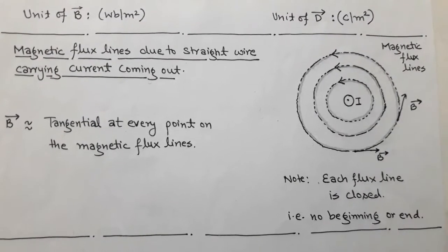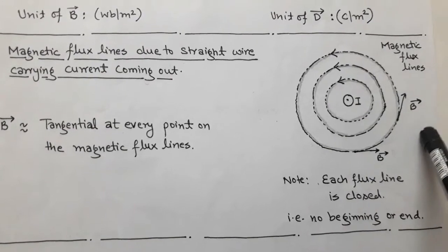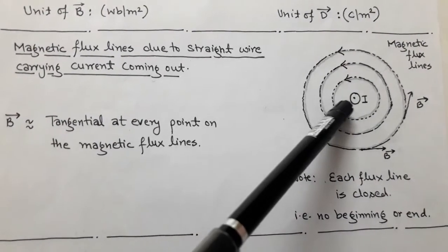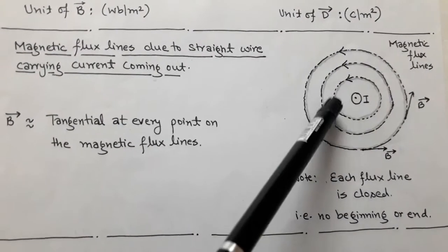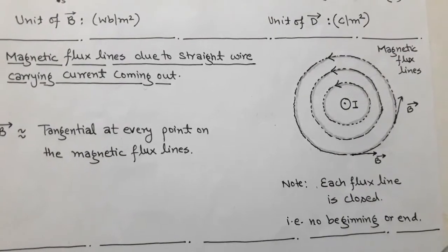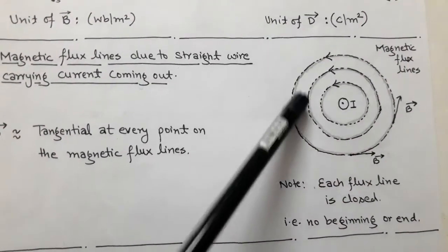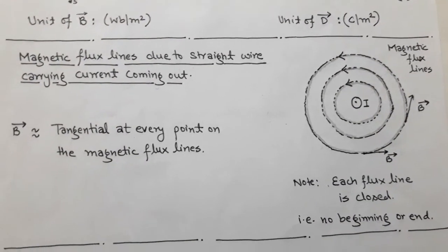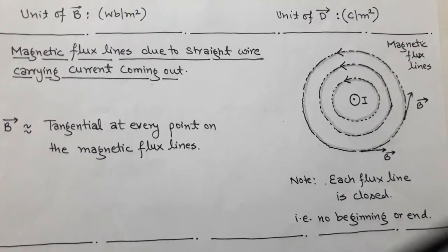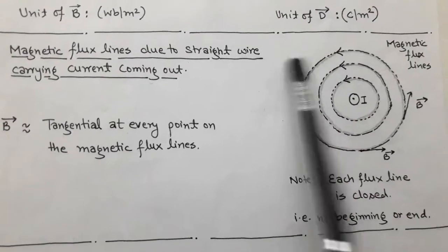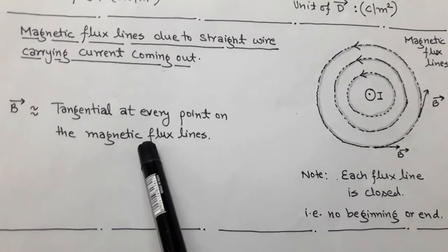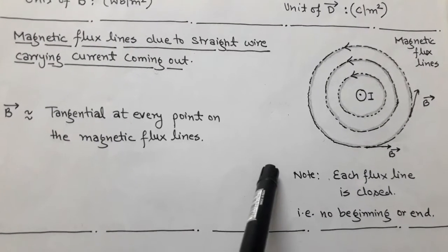To represent magnetic flux lines, we consider a DC steady current flowing through a conductor. We consider a conductor carrying current I coming out of the page. Using the right-hand rule — with the curl of the fingers — we can determine the magnetic flux lines. The direction of the magnetic flux lines is anti-clockwise. The magnetic flux density B at every point on this closed path makes a tangent with respect to the magnetic flux lines. The key point is that magnetic flux lines are closed.